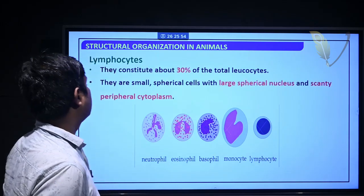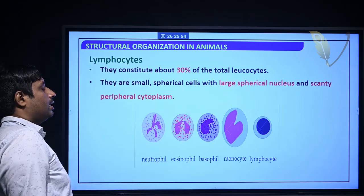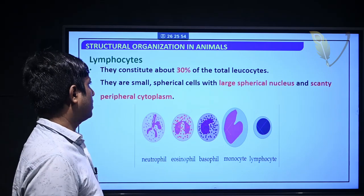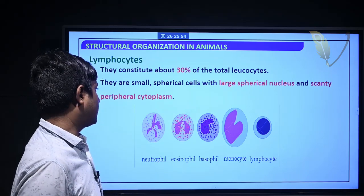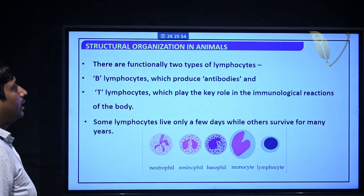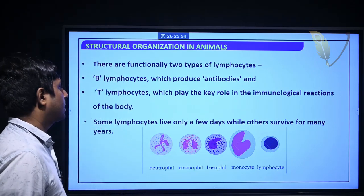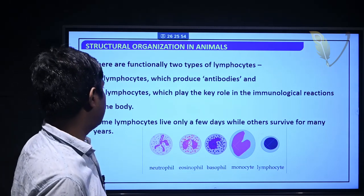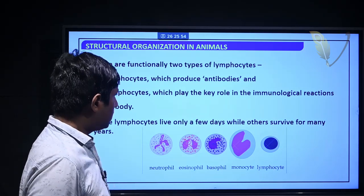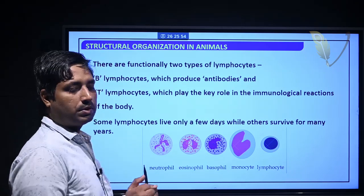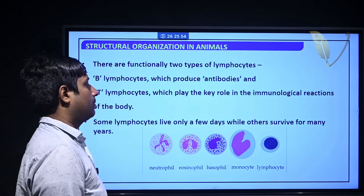Lymphocytes constitute about 30% of the total leukocyte. They are small spherical cells with a large spherical nucleus and scanty peripheral cytoplasm. Functionally, there are two types: B-lymphocytes, which produce antibodies, and T-lymphocytes, which play a key role in the immunological reactions of the body. Some lymphocytes live only a few days while others survive for many years.